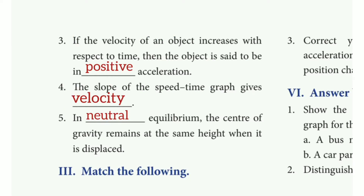Third: If the velocity of an object increases with respect to time, then the object is said to be in positive acceleration. Fourth: The slope of the speed-time graph gives velocity. Fifth: In neutral equilibrium, the center of gravity remains at the same height when it is displaced.